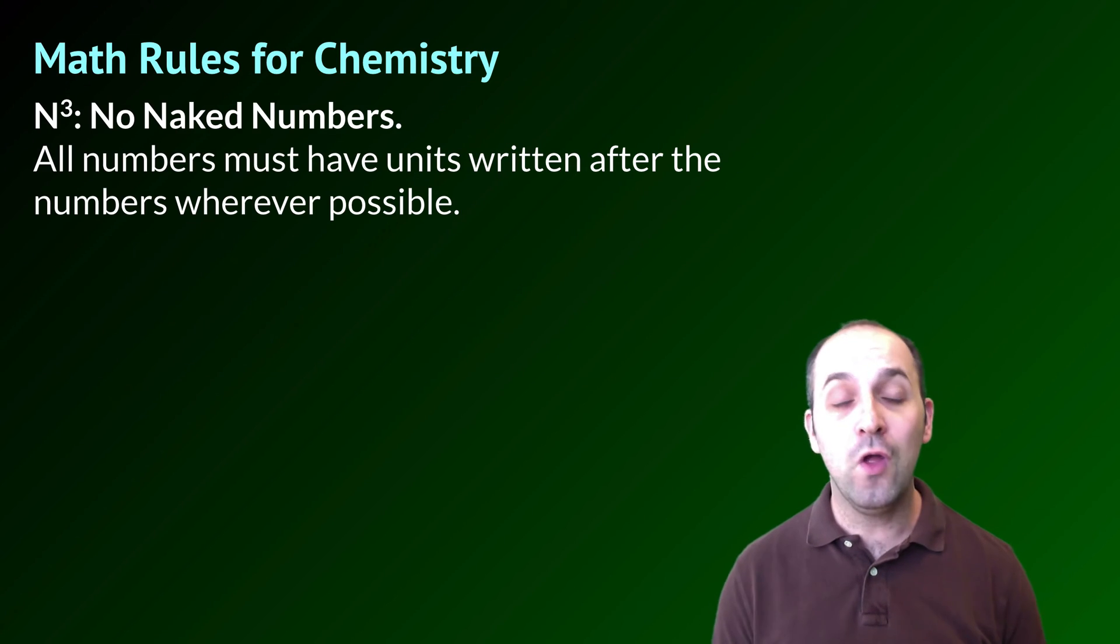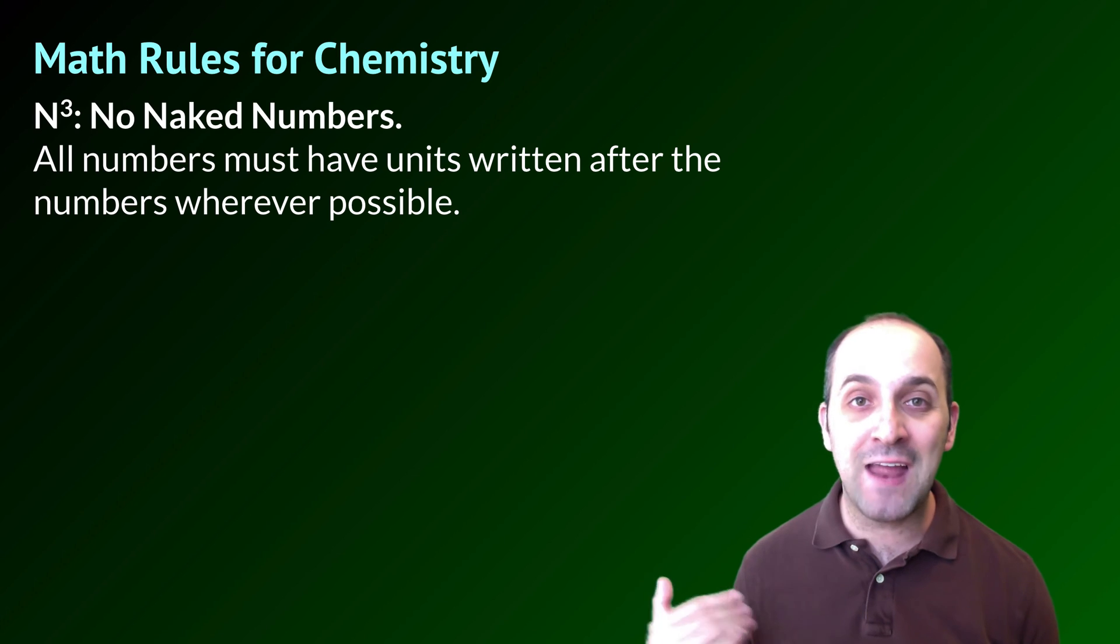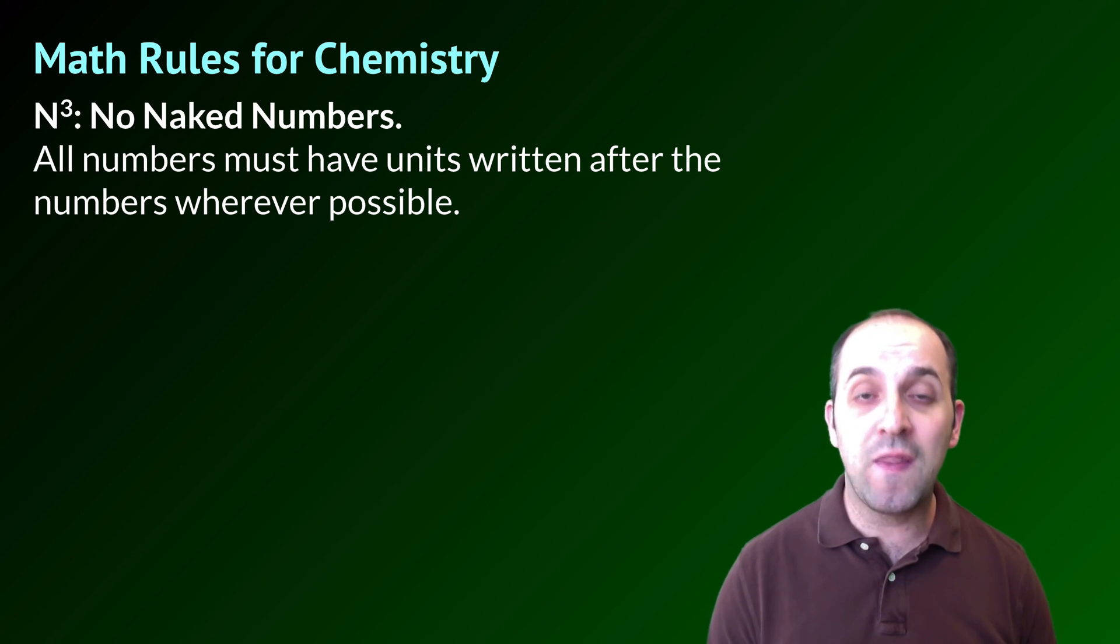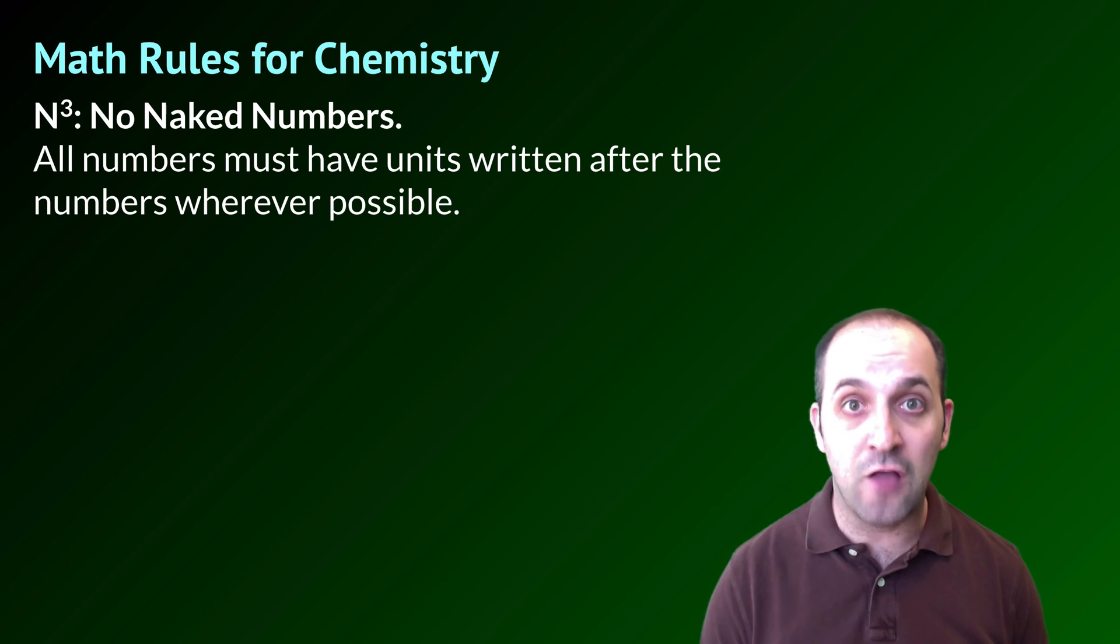This is a pretty simple rule. It just means that all numbers have to have units written after them wherever that's possible. There'll be a couple of cases where we deal with unitless quantities in this course, but that'll be the exception and definitely not the rule. So whenever we use a quantity that has a unit, you absolutely have to put that unit after your measurement.